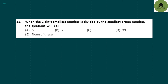When the 2-digit smallest number is divided by the smallest prime number, the quotient will be? The 2-digit smallest number is 10, and the smallest prime number is 2. 10 divided by 2 gives a quotient of 5. Option A is your correct answer.